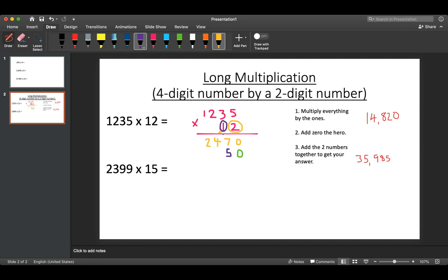So 1 times 5 equals 5, 1 times 3 equals 3, 1 times 2 equals 2, 1 times 1 equals 1. And what we're going to do now is we're actually going to add these numbers together to get our final answer.